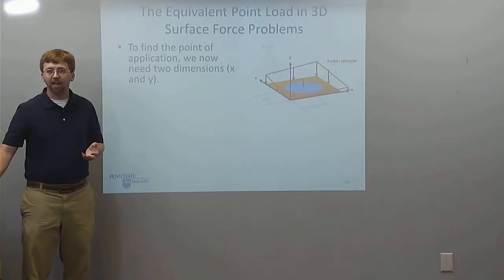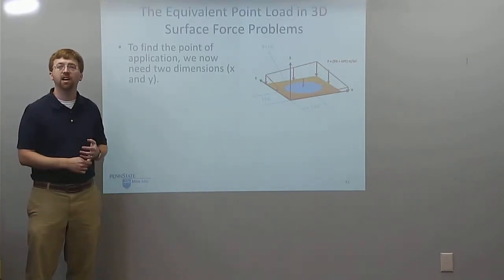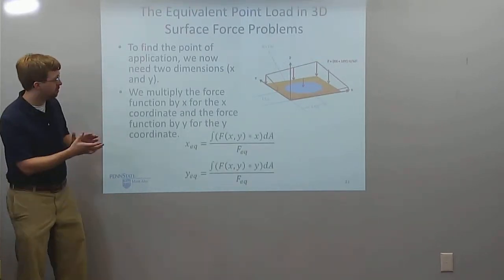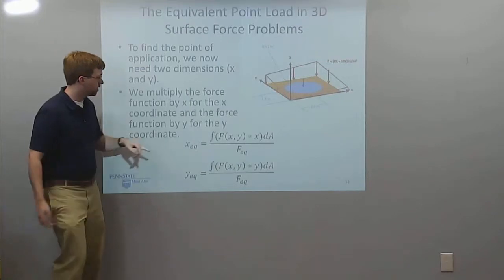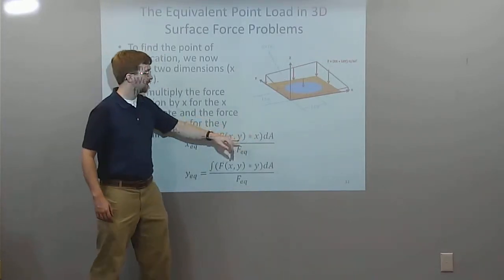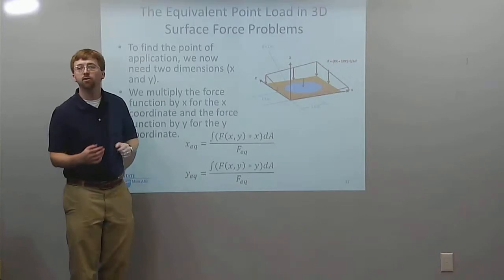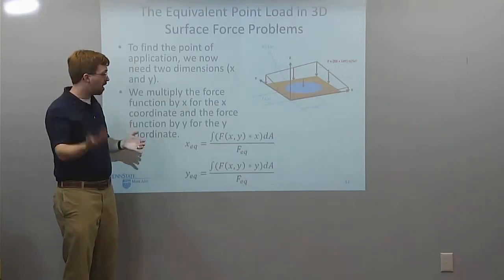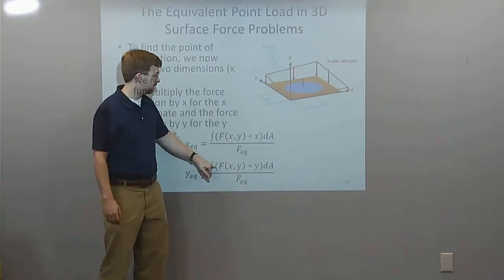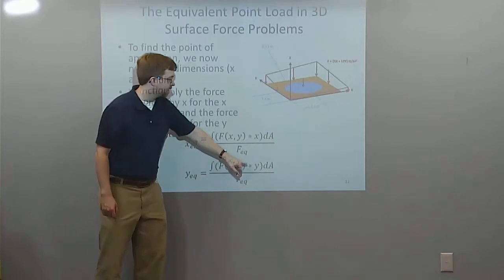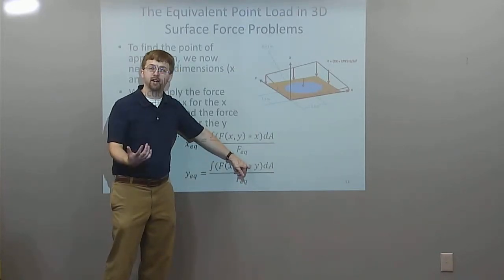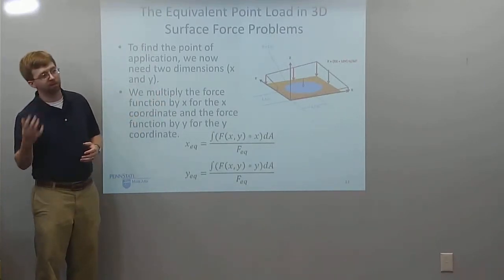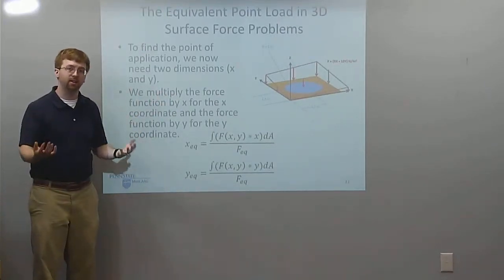To find the point of application in 3D, we now have two dimensions — X and Y — so we need to find both X_EQ and Y_EQ. For X_EQ, integrate f(x, y) times x over the area and divide by F_EQ. For Y_EQ, it's the same thing but multiply by Y instead of X, so integrate f(x, y) times y over the area — again breaking it into integrate with respect to X then with respect to Y — and divide by F_EQ.